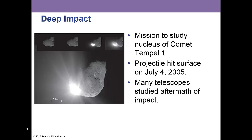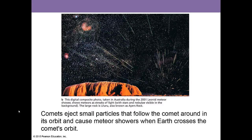A mission I was involved with in the 2000s was Deep Impact. The chief scientist was out of Maryland, and I had met him during the Comet Hyakutake study in the 1990s. This spacecraft had a projectile that hit Comet Tempel 1, and you can see the impact in this picture — it hit on July 4th, 2005. Comets also eject small particles that follow their orbit and cause meteor showers when Earth crosses that orbit. We see a meteor shower about once a month, and meteors in a shower appear to emanate from the same area of the sky because of Earth's motion through space.